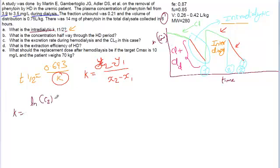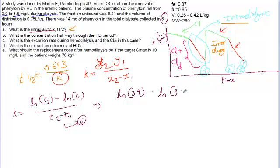The dialysis took place for six hours. So ln of concentration 3.9 minus natural log of 3.5, that means the concentration of phenytoin fell from 3.9 to 3.5, like during dialysis. That means this is 3.9 and this is 3.5. So that is it. So two time points divided by six.